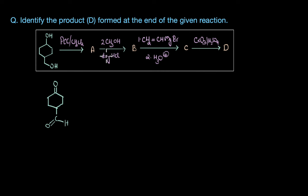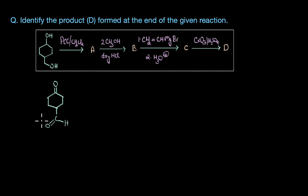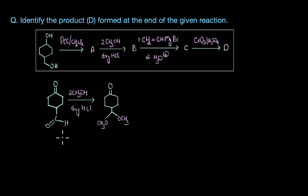In the next step, we are reacting this compound with methanol in the presence of dry HCl. This is a classic example of converting a carbonyl compound to the corresponding acetal. The question is: at which side does the nucleophilic addition take place — the aldehyde or the keto side? Obviously the more reactive side is the aldehyde side, which means the aldehyde gets converted to the corresponding acetal.